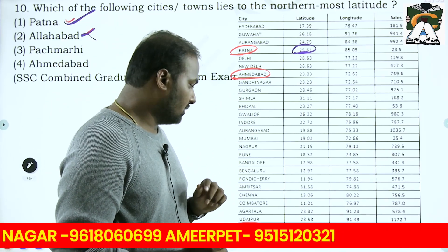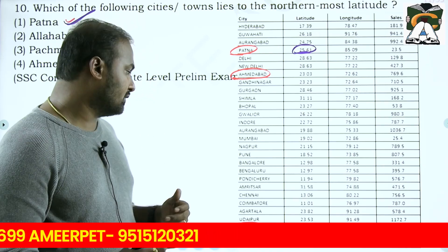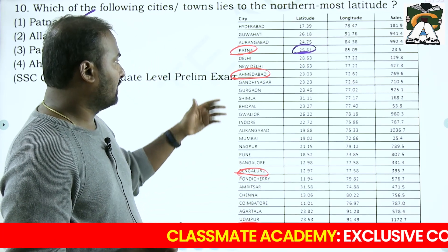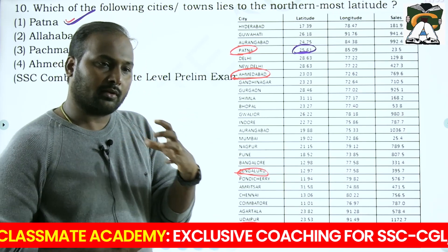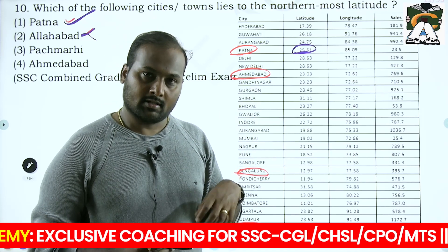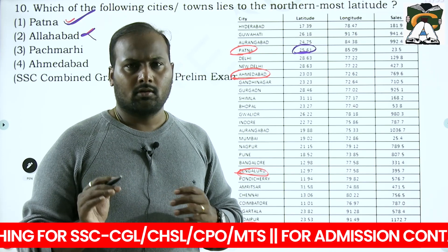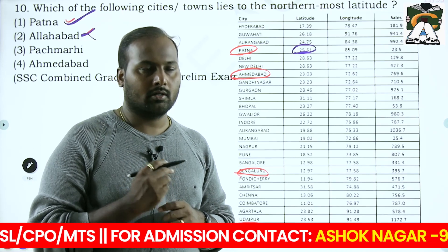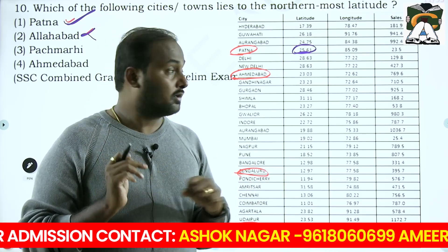Try to remember some prominent cities with respect to Bangalore, Hyderabad, Delhi, and most importantly Goa. Once you remember Goa, you can divide the Western Ghats into Northern Sahyadris and Southern Sahyadris. Goa is around 15 to 16 degrees latitude. From there you can remember various cities regarding their latitude positions.